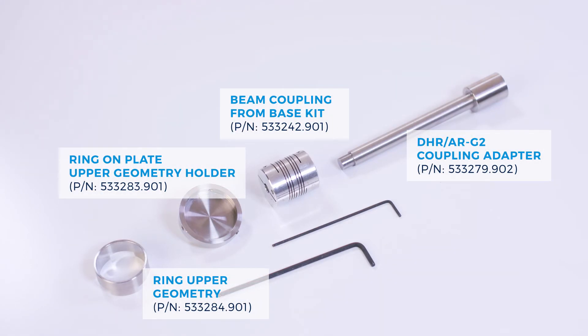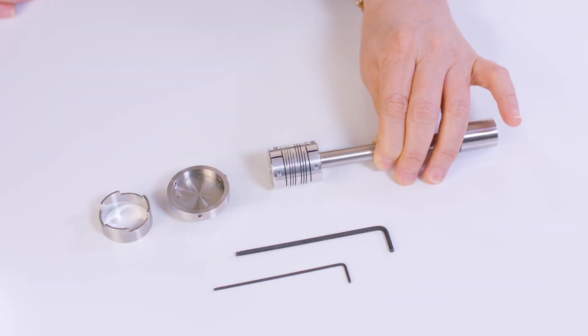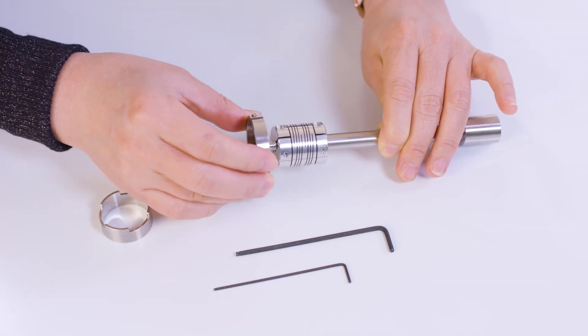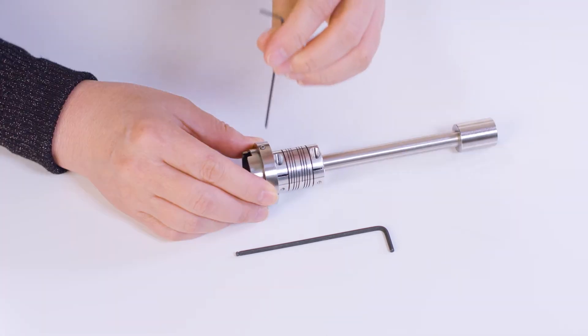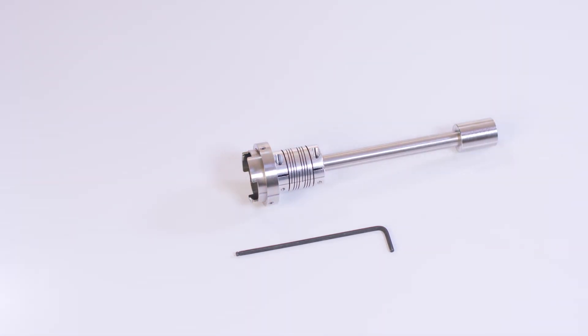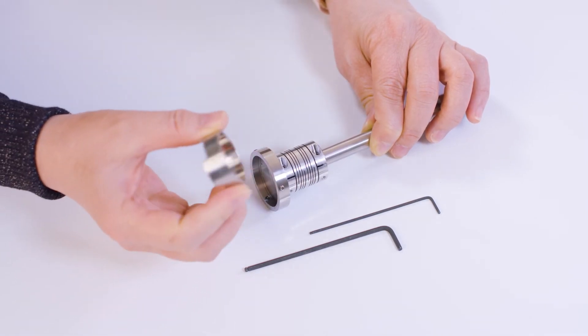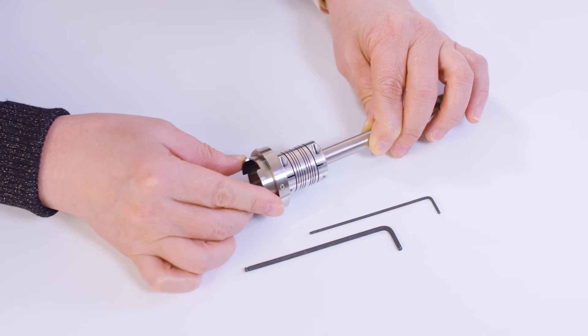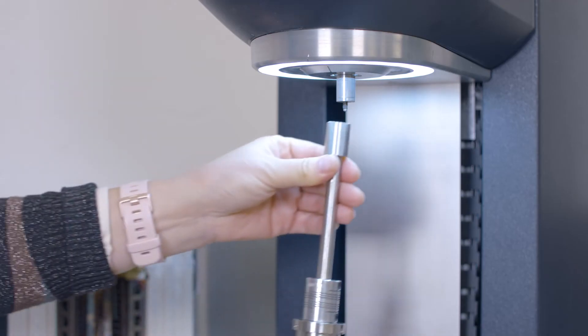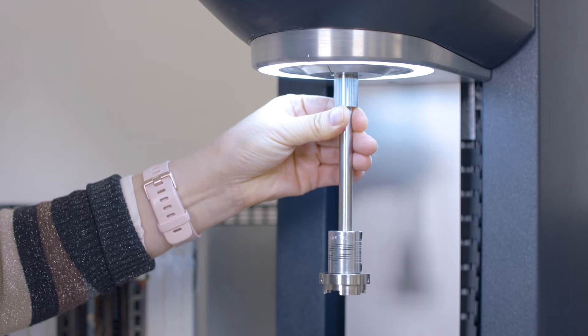For the top fixture, you will need to use this long coupling adapter. Insert the beam coupling. Attach the Ring-on Plate upper geometry holder and then attach the Ring to the holder. You can either use this side as a full ring or use this side as a half ring. After that, install this upper geometry to the top of the rheometer.